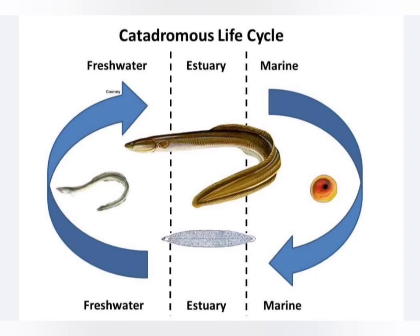They live in saltwater and move to the spawning area. This is catadromous. Amphidromous fish do the vice versa — they move between the sea and freshwater.